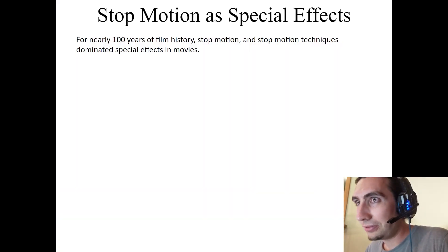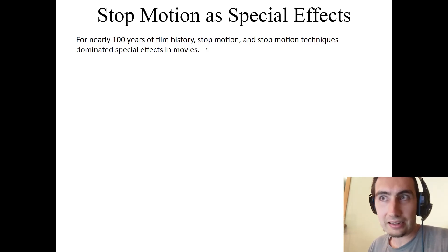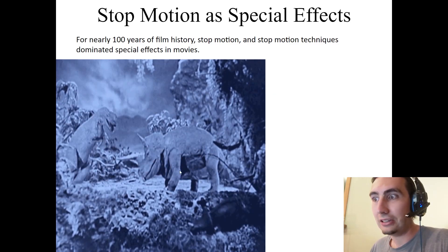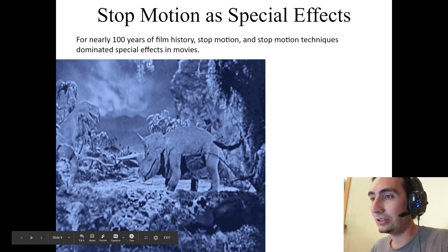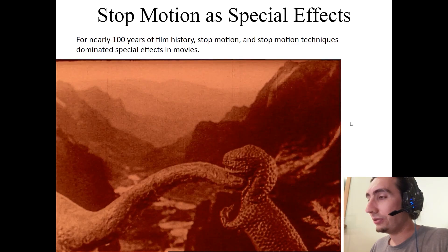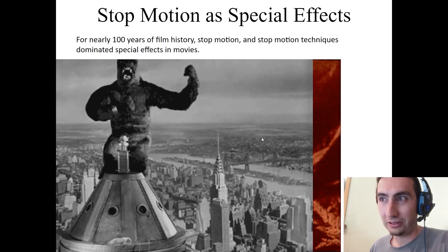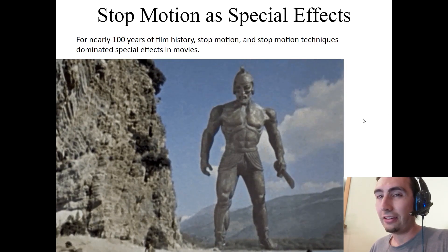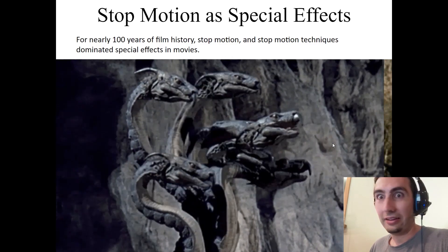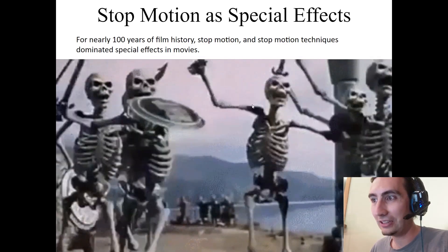Over the course of the next almost 100 years of filmmaking, stop motion and similar techniques really dominated movies and special effects. Some of the oldest and most famous examples: The Lost World animated the dinosaurs with stop motion; the original King Kong was stop motion; and Jason and the Argonauts had some really great stop motion with the hydra and skeleton armies that looked like they were coming alive, mixed with live action — it was very well done.